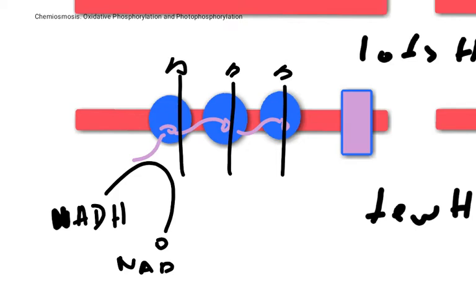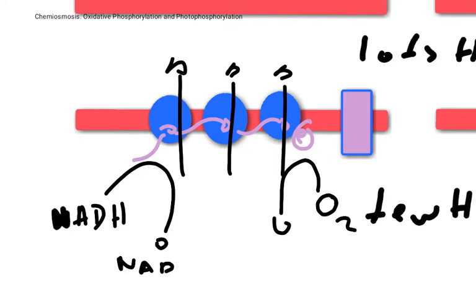At the end of the chain of oxidation and reduction reactions, you have oxygen — which is what you're breathing in at the moment. This oxygen joins with the electron that's come from the Krebs cycle and the link reaction via the NADH, and also joins with hydrogen ions, and it forms water.